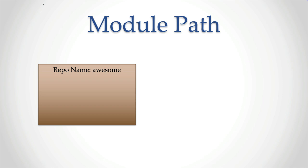Let's now look at our module path. Say I've created a repository in my version control system called 'awesome'. The URL where you can find my repository — let's say it's sc.me, as if that's my domain. I can create a directory to represent different users, so 'vero' is a user. Since I might want to create multiple projects I can have a repository for each, so in this case I'll have a repository called awesome. The full URL to where my repository is would be sc.me/vero/awesome — that's my repository name.